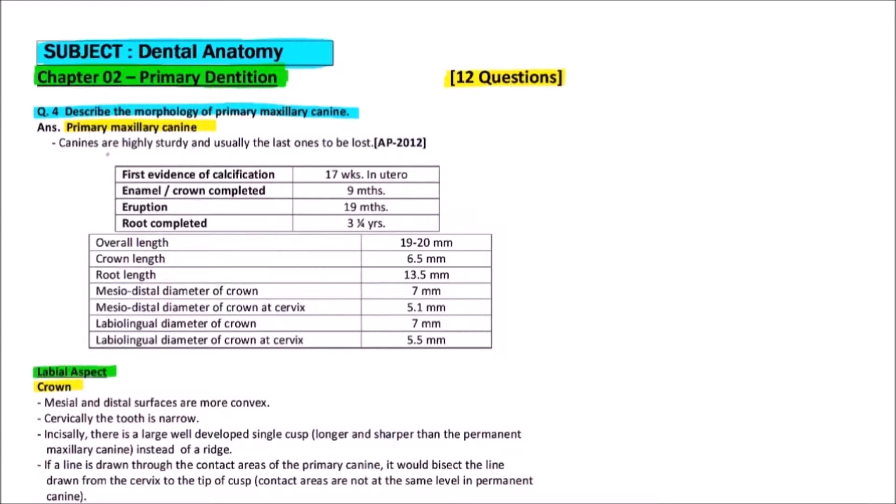The primary maxillary canine. Canines are highly sturdy and usually the last one to be lost.